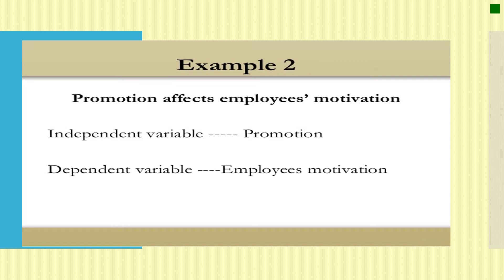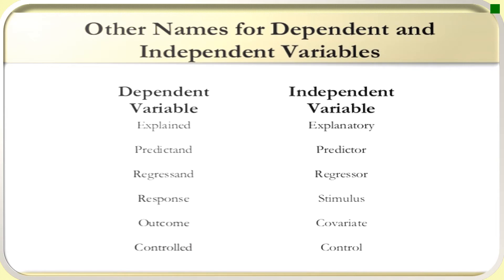Some researchers use other terms for dependent and independent variable. Other names for dependent variable include: explained, predictant, regressant, response, outcome, and control.